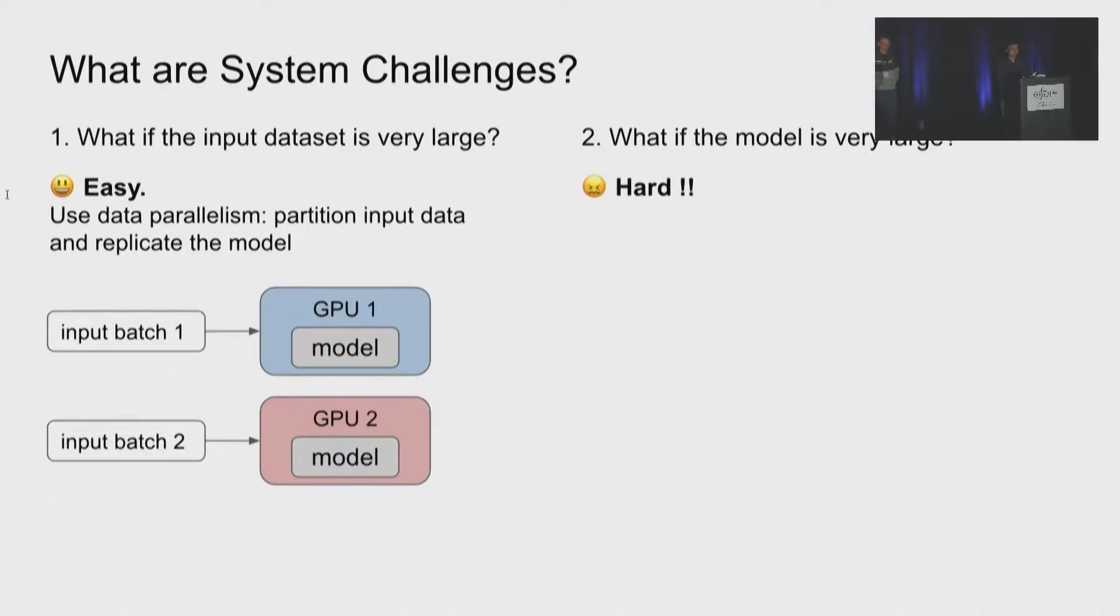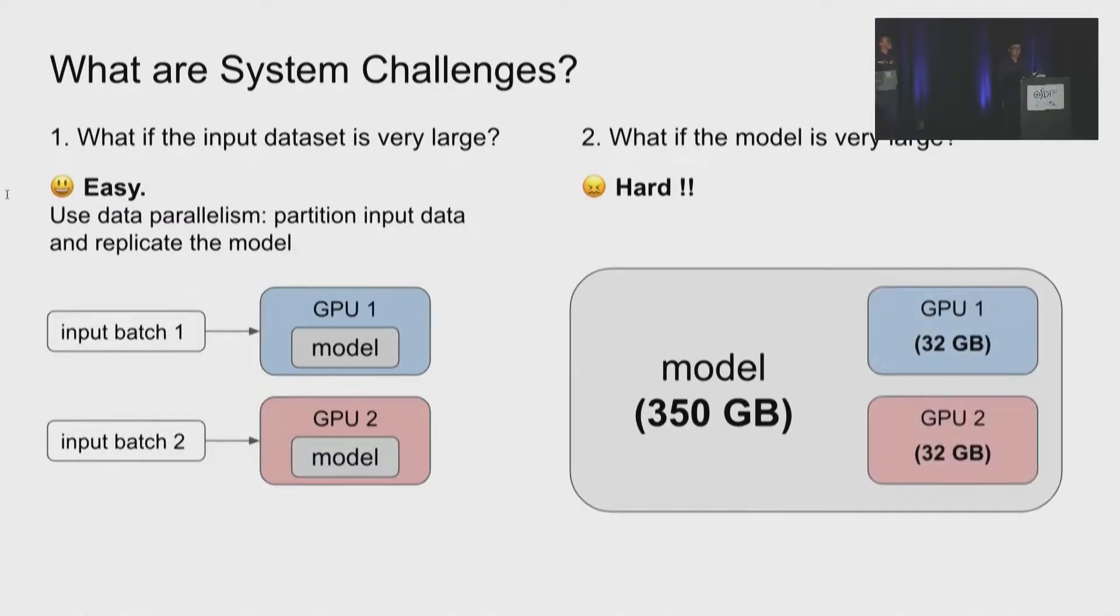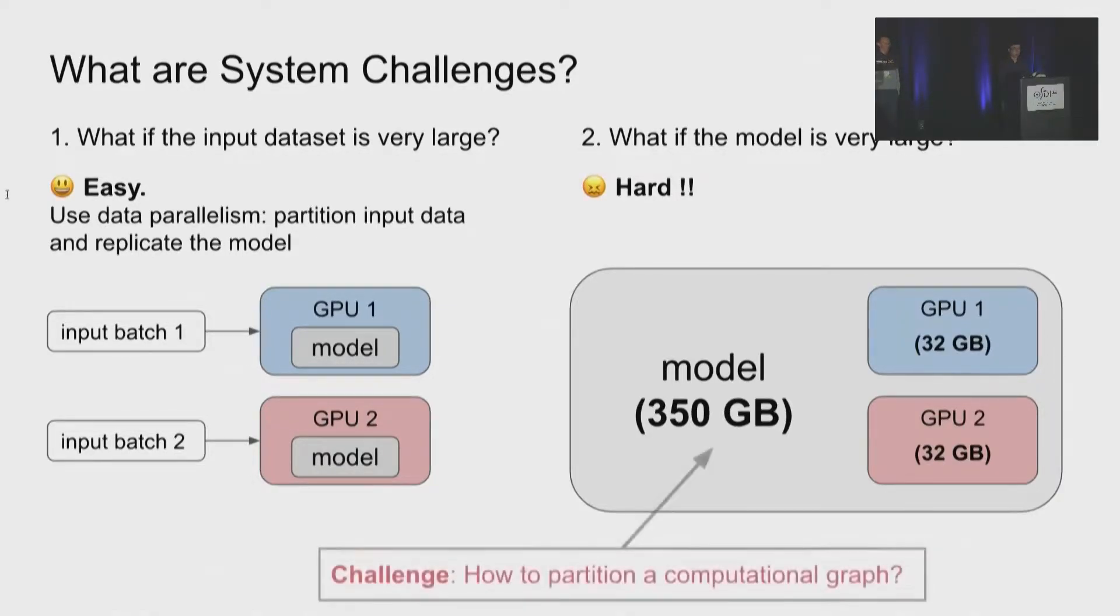The second problem is much harder because if the model is very large, the size of the model can be much larger than the device memory capacity. As shown in this figure, we need at least dozens of GPUs to hold the weight parameters. So we cannot afford to replicate the model. Needless to say, we also have to store a lot of intermediate results. So we also have to partition the model. However, unlike the data set, which are just a sequence of files, the model is a complicated computational graph. How to partition it is non-trivial.